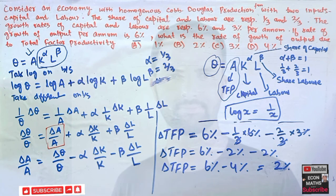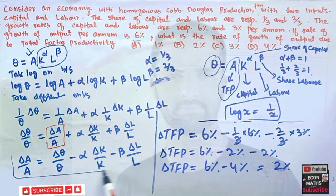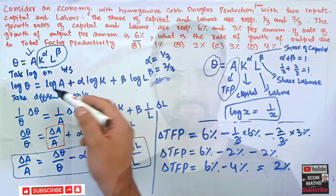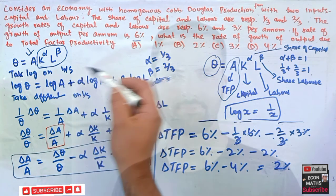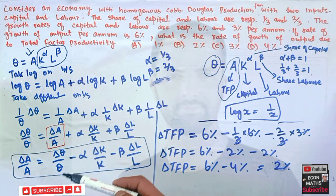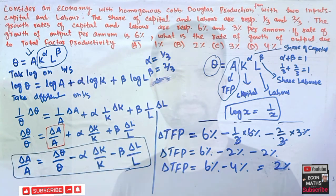We can use this formula directly. To summarize: we applied logarithms to the Cobb-Douglas function, took differentials, and rearranged terms to isolate total factor productivity on one side. I hope that makes it clear. Thank you.